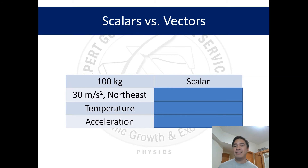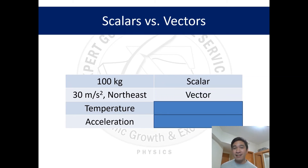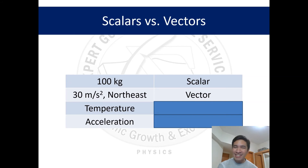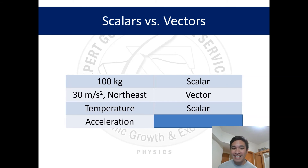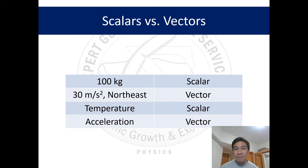Yes, 30 meters per second squared northeast is a vector quantity, because vectors have both magnitude and direction as seen in that example. How about temperature — is it a scalar or a vector? You cannot say 'I have a fever of 38 degrees Celsius to the north' — it sounds weird. So temperature is just a scalar. Finally, acceleration: driving a car at 10 meters per second squared to the north contains both magnitude and direction, so acceleration is a vector quantity.